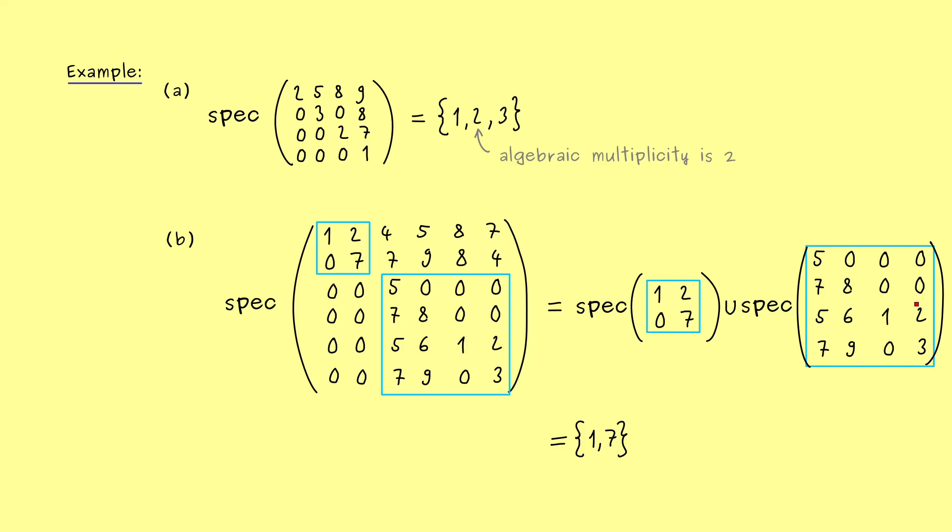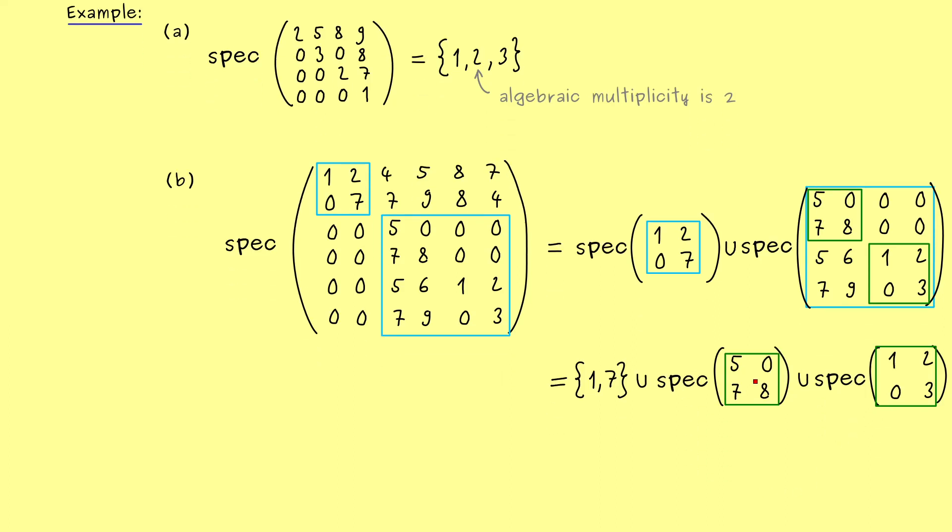It's really close to that but not quite. However with the zeros in the top right corner we see the block form again. Therefore we can reduce this 4 times 4 matrix again. So we have union spectrum of the first matrix union spectrum of the second matrix. And there the nice thing to see is that we have triangular matrices again.